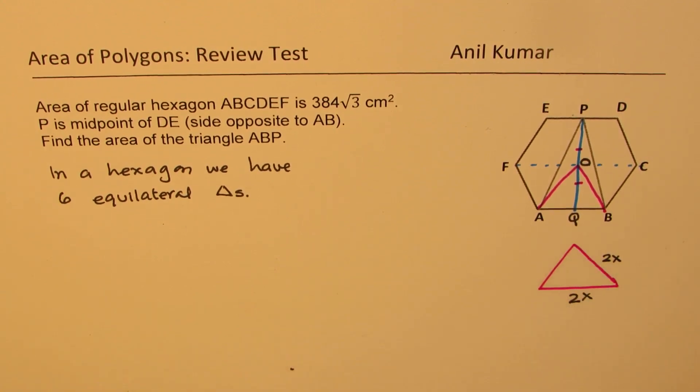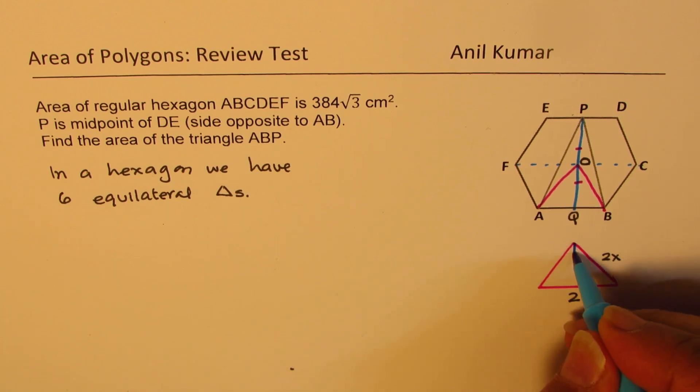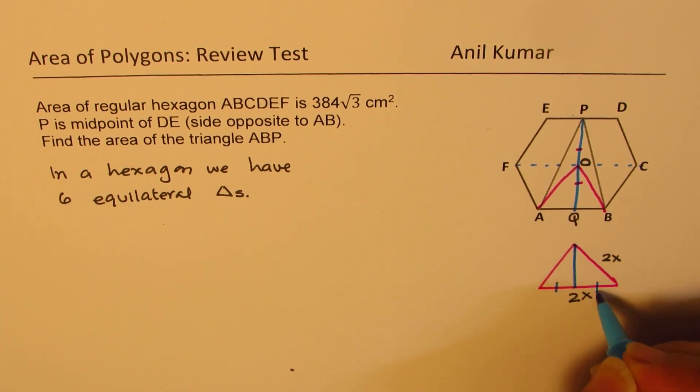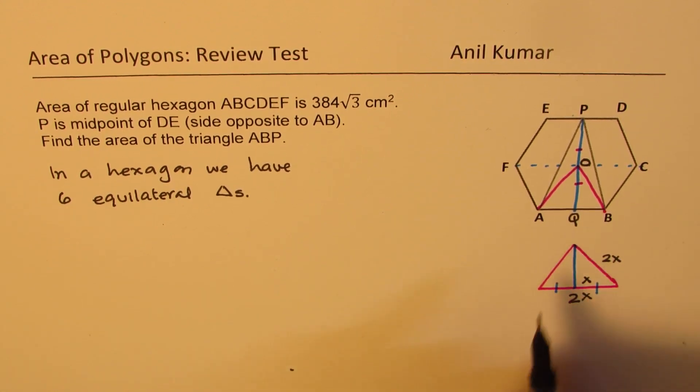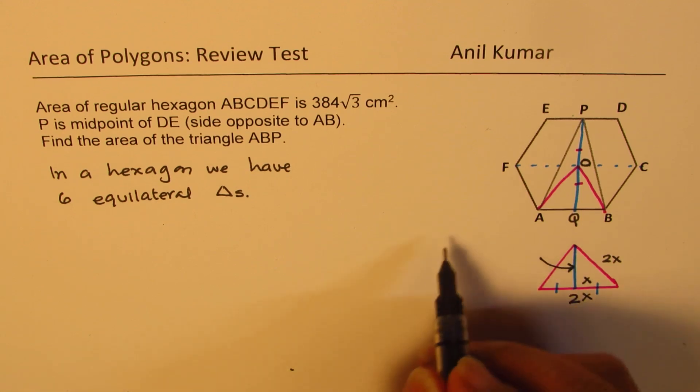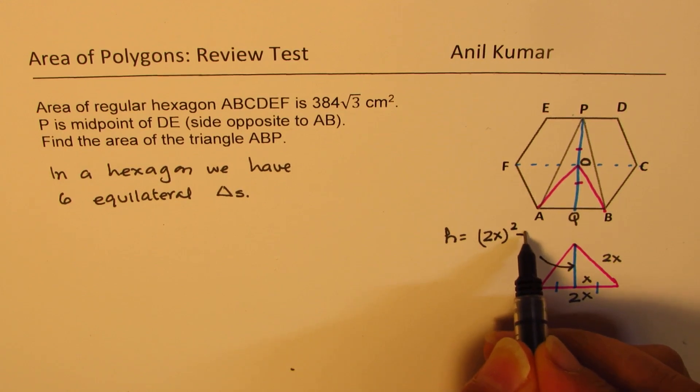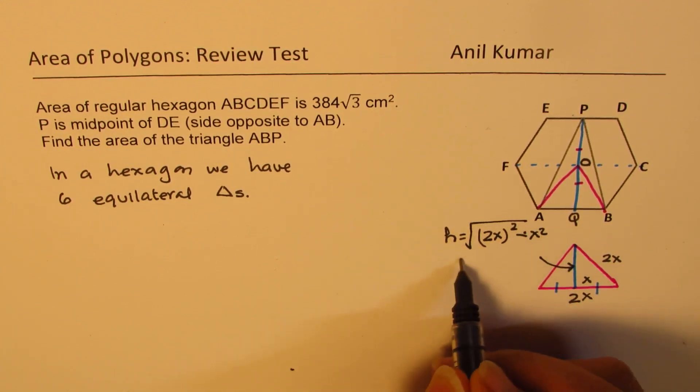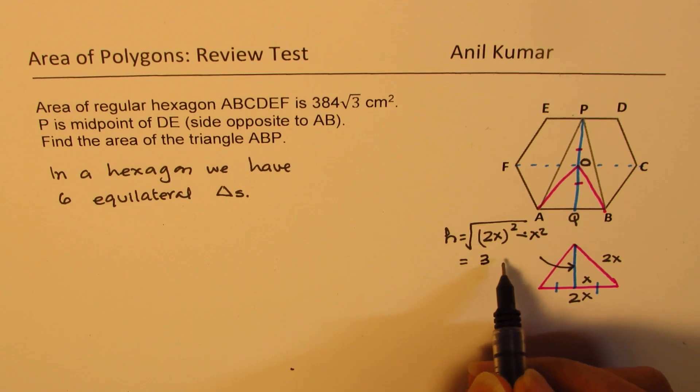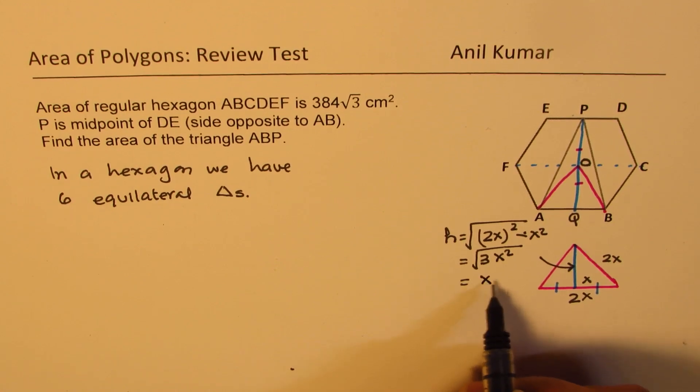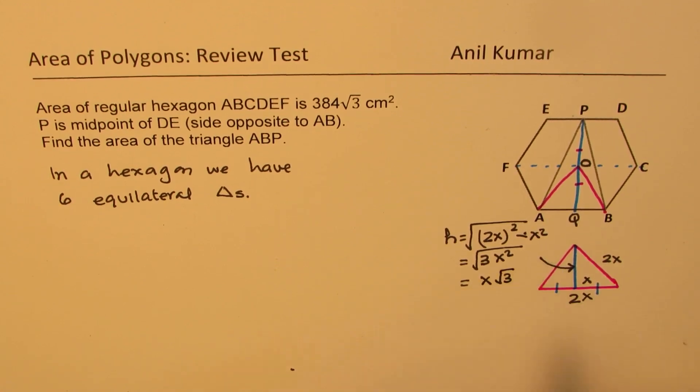When you drop a perpendicular, it is going to divide this into equal parts. So this will be x. And the height will be equal to √(2x² - x²). This height is going to be √(4x² - x²), which basically is √(3x²), or you can write this as x√3. So that is the height.